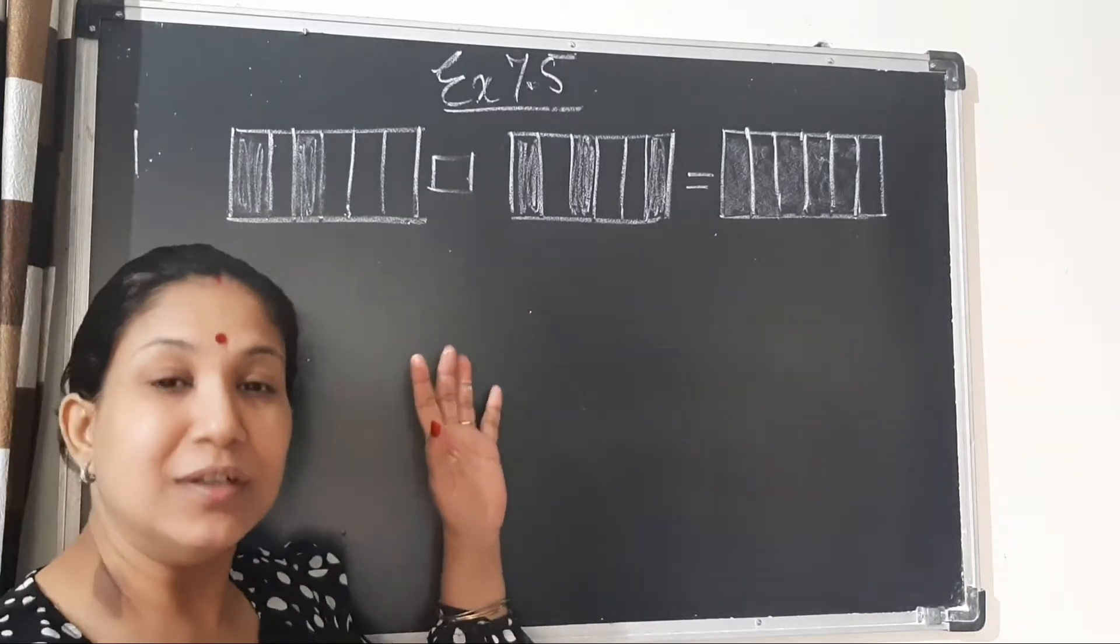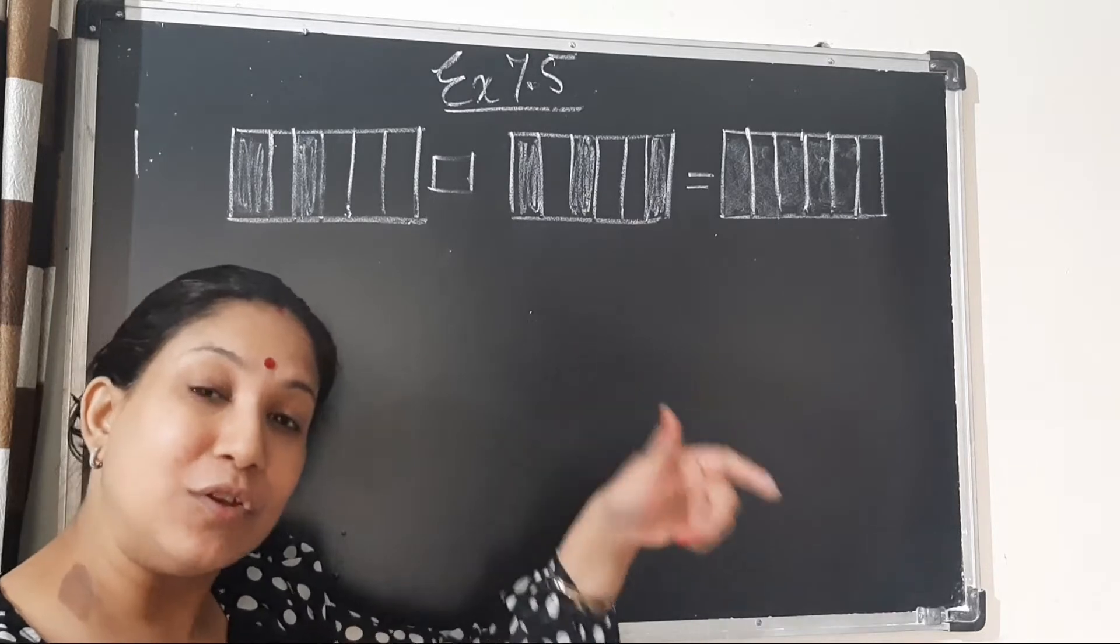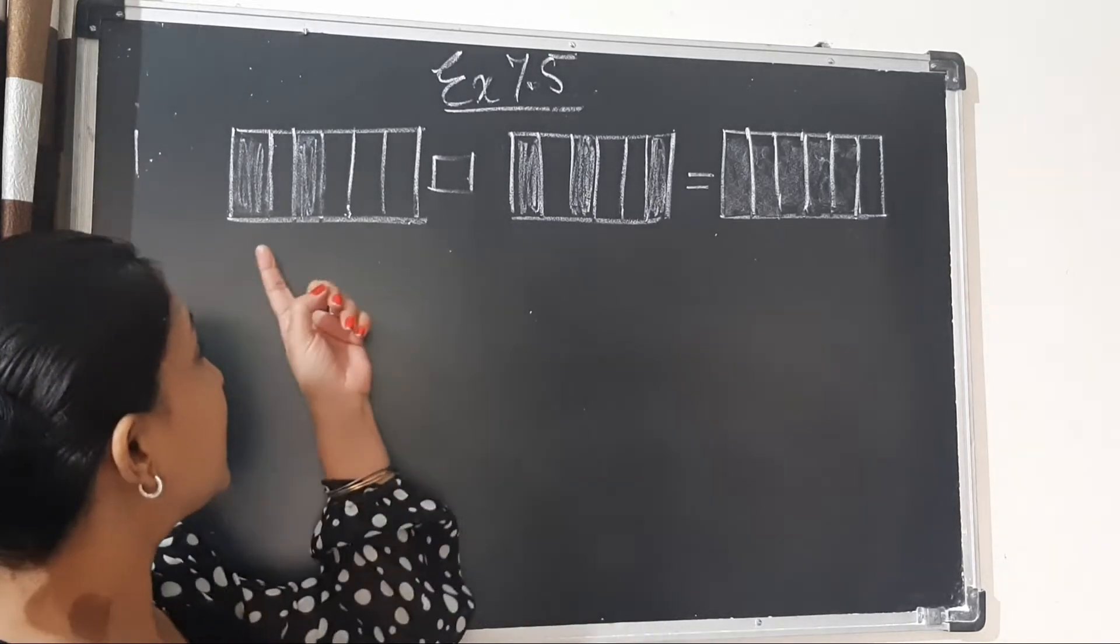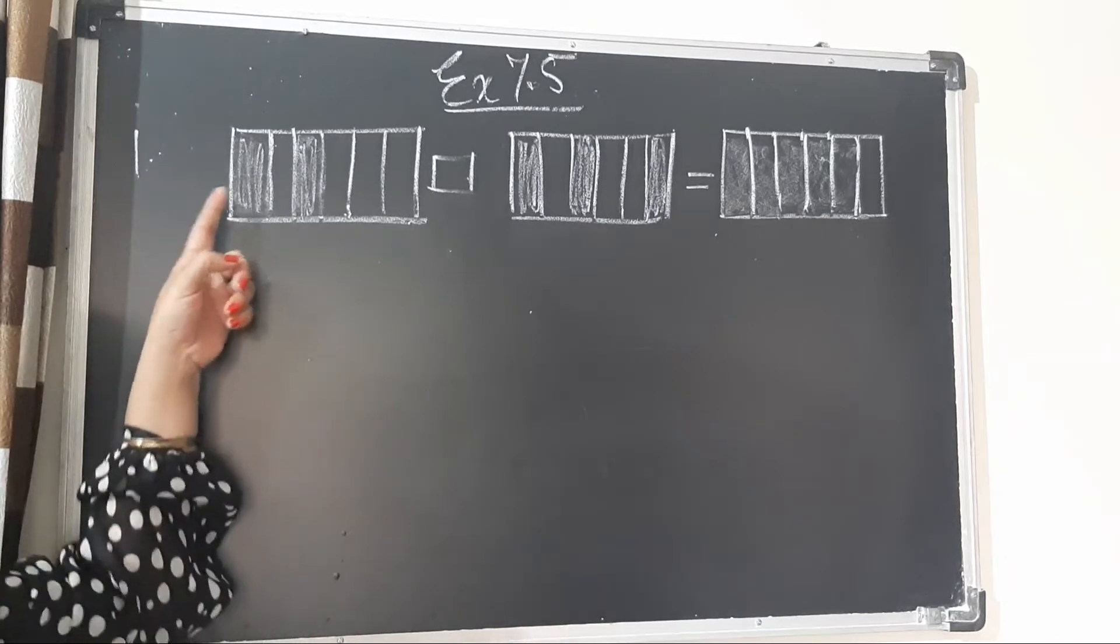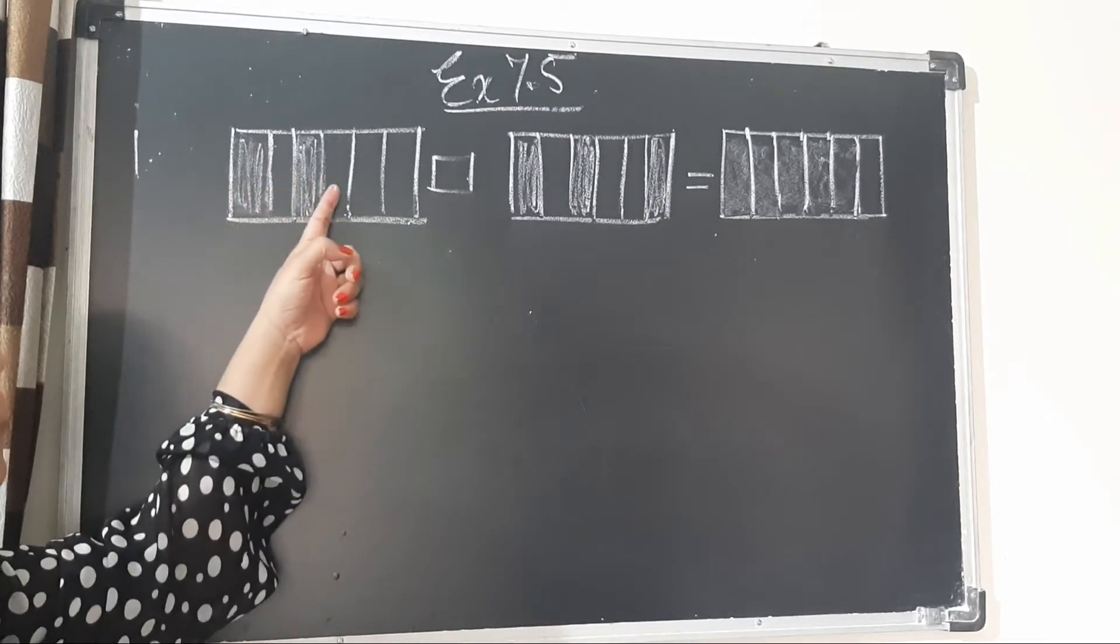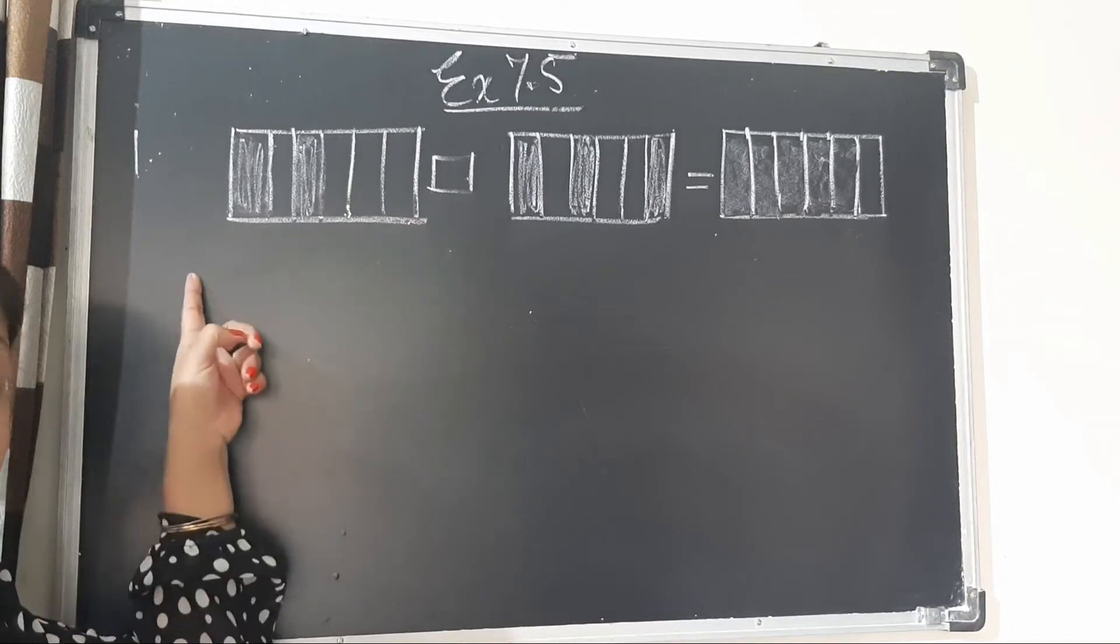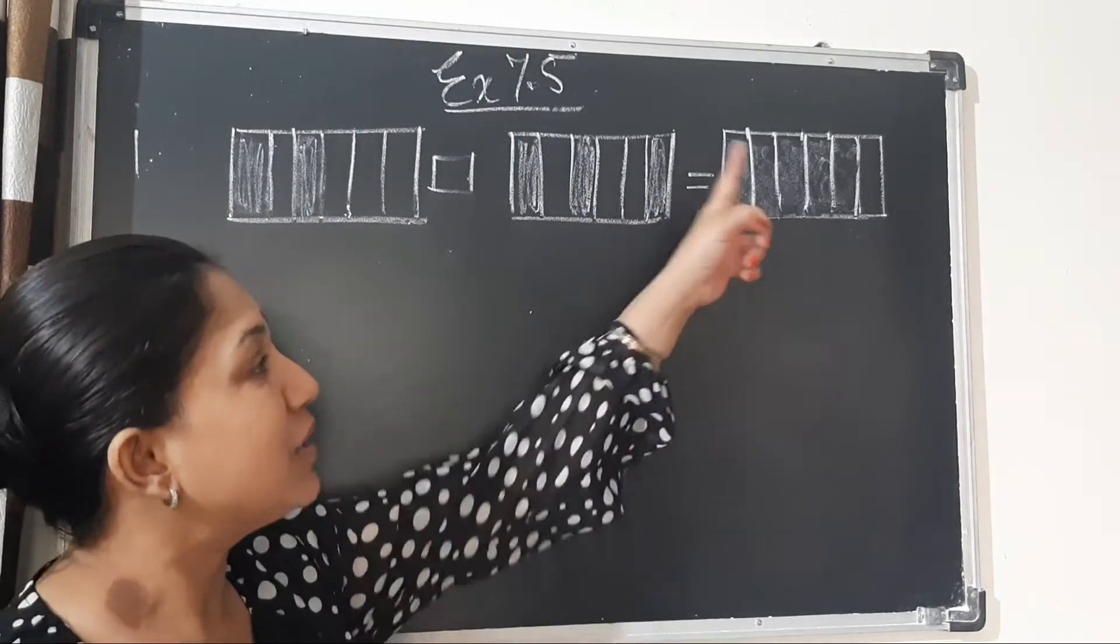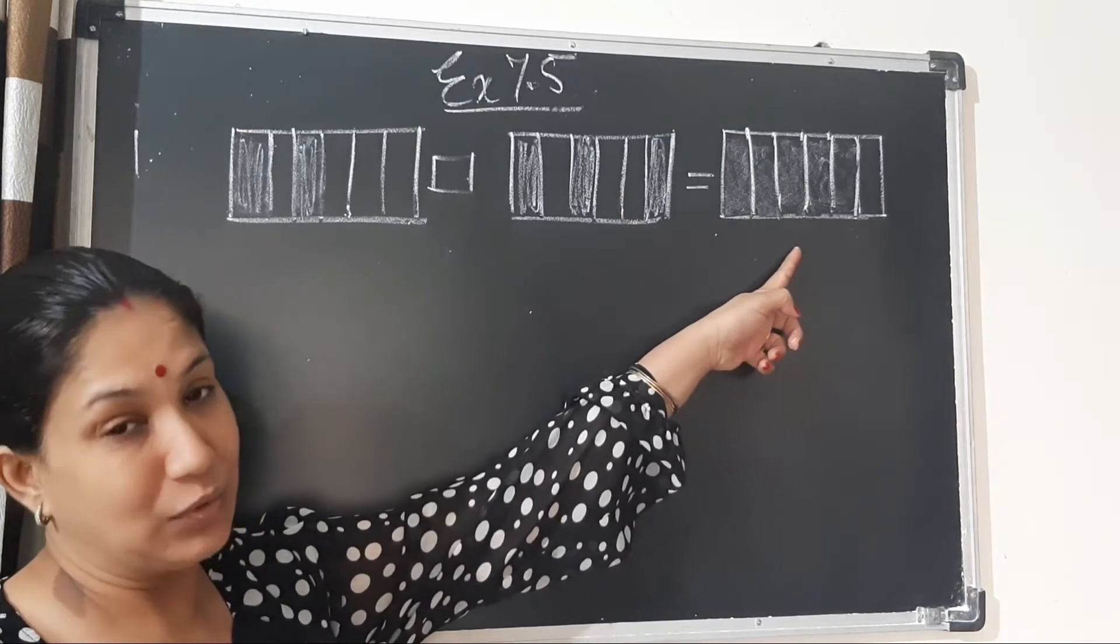I have changed the figure from your book, but you try to solve it. I have taken this figure where you can see how many parts are there: 1, 2, 3, 4, 5, 6 equal parts. In the same way here also 6 equal parts and there also 6 equal parts.